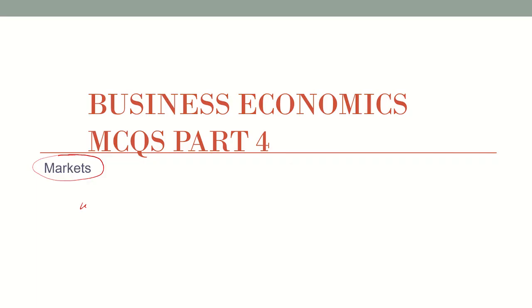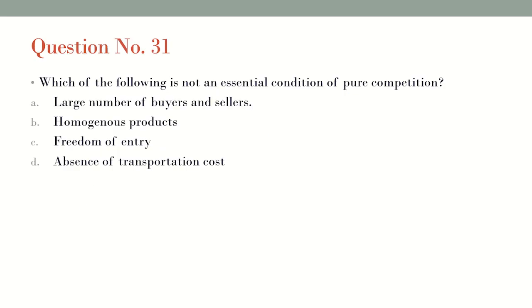Let's start with question number 31: Which of the following is not an essential condition of pure competition? Large number of buyers and sellers is an essential condition, homogeneous products is an essential condition, freedom to enter and exit is also an essential condition, but absence of transportation cost is not an essential condition. So the answer is: absence of transportation cost.